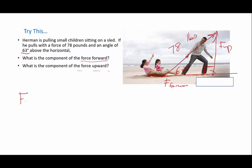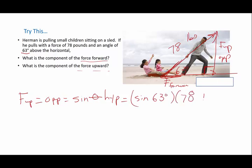So force up, that happens to be my opposite side. So I'm going to use sine. So the opposite is going to be equal to the sine of theta times the hypotenuse. So the sine of 63 times 78 pounds of force, and I do the math, 63 sine times 78. I ended up with an answer of 69.5 pounds.